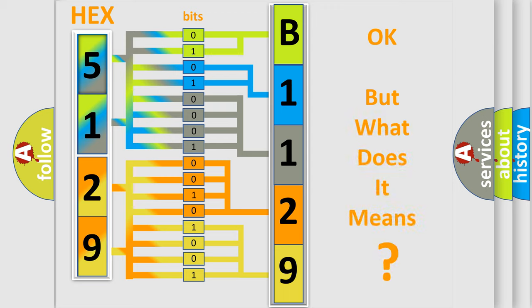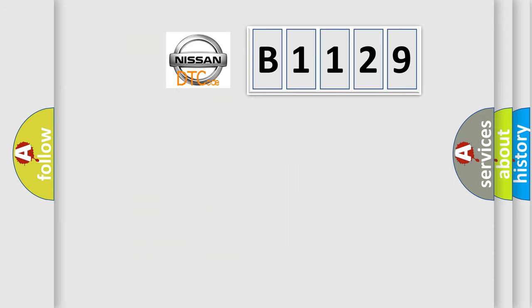The number itself does not make sense to us if we cannot assign information about what it actually expresses. So, what does the diagnostic trouble code B1129 interpret specifically for Nissan car manufacturers?